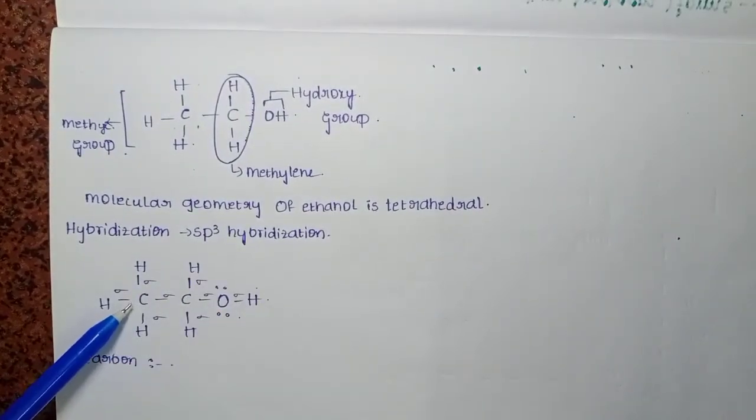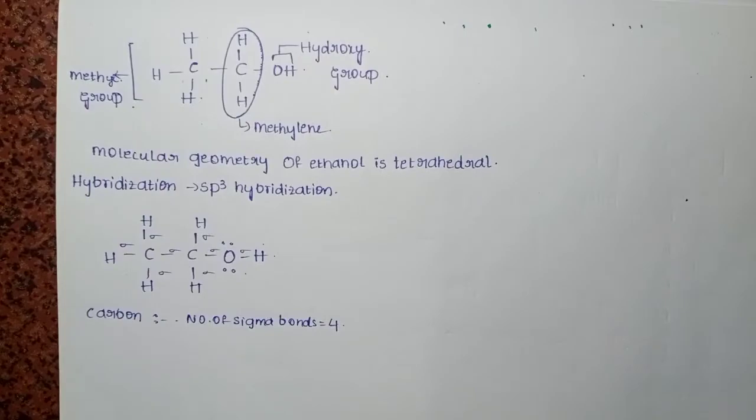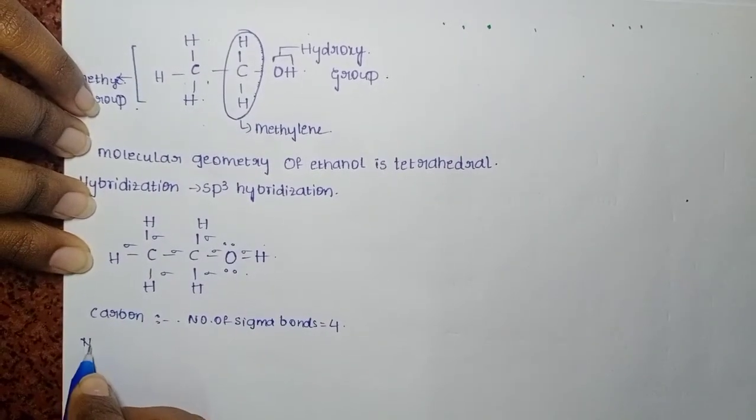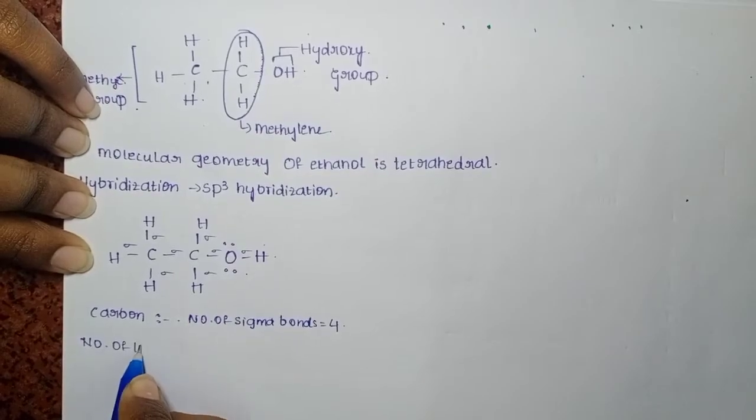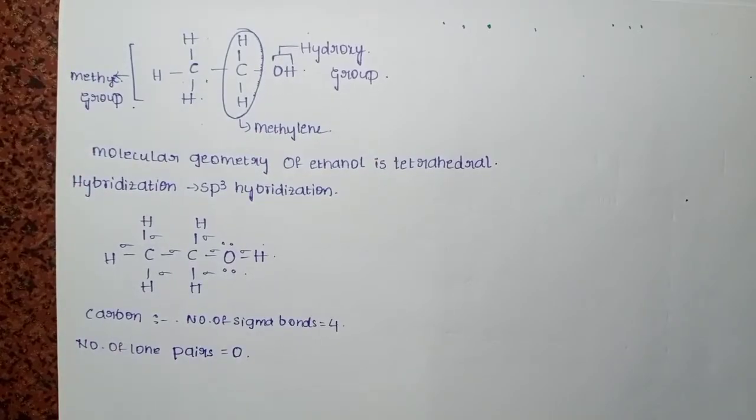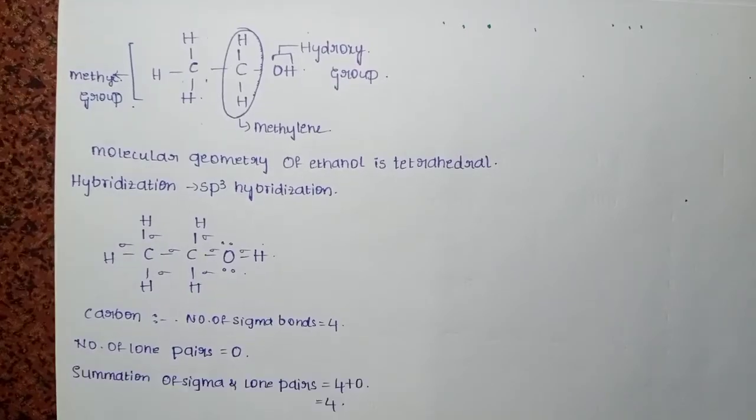There are four sigma bonds and no lone pairs for this carbon. Number of sigma bonds plus lone pairs gives the hybridization. The hybridization of the carbon is SP3 hybridization.